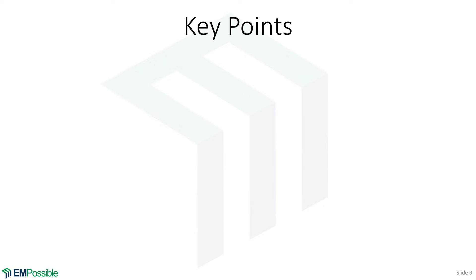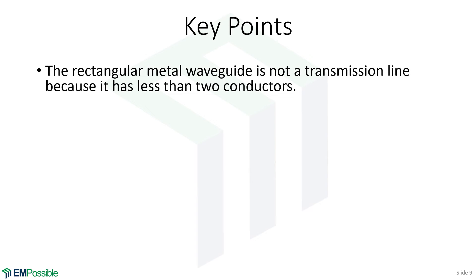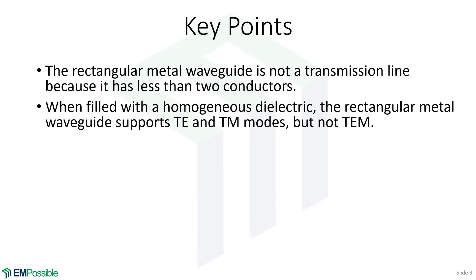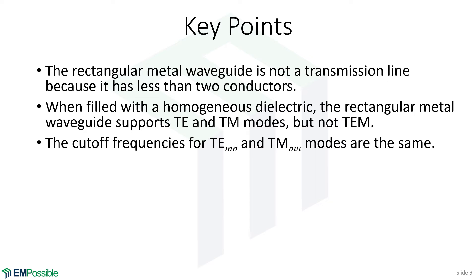Key points: the rectangular metal wave guide is not a transmission line since it has only one conductor; transmission lines require two or more conductors. There are also all-dielectric wave guides, which cannot be transmission lines either. With a homogeneous fill, the wave guide supports TE and TM modes but never TEM. The cutoff frequency equation is the same for TE and TM, so TE22 and TM22 have identical cutoff frequencies — it depends only on the indices, not the mode type.